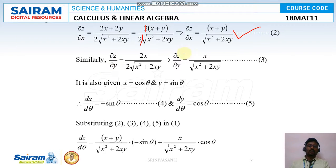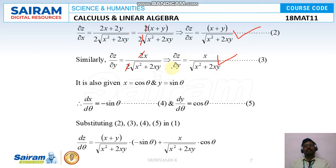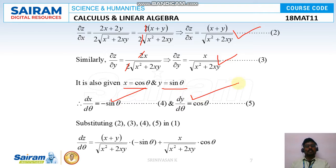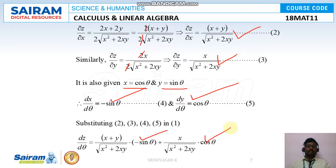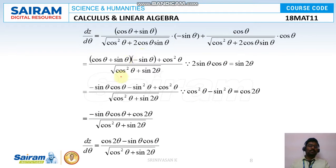Similarly, ∂z/∂y = 2x / (2√(x² + 2xy)), so the 2's cancel and ∂z/∂y = x / √(x² + 2xy). Given x = cosθ and y = sinθ, dx/dθ = −sinθ and dy/dθ = cosθ. Substituting equations 2, 3, 4, and 5 into equation 1, we get dz/dθ = [(x + y)/√(x² + 2xy)](−sinθ) + [x/√(x² + 2xy)](cosθ). Then substituting x = cosθ and y = sinθ.